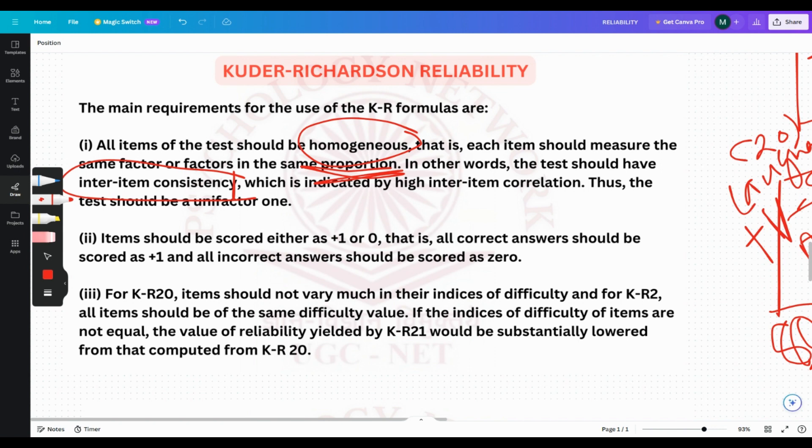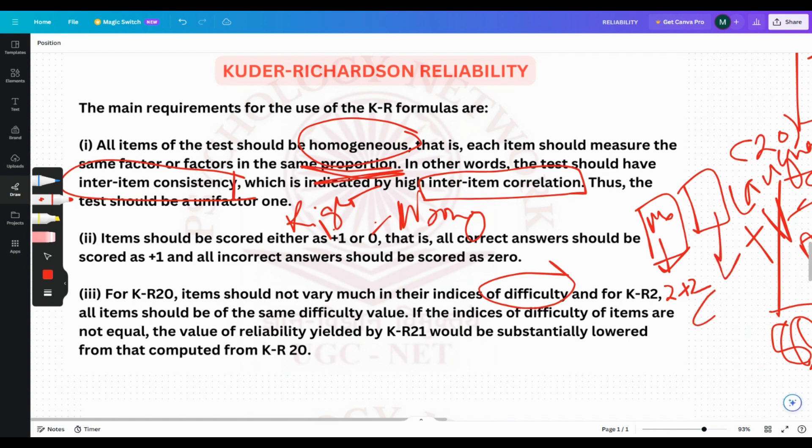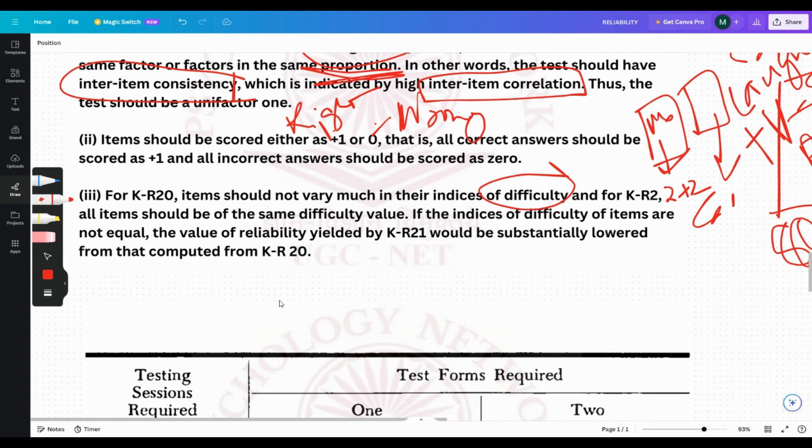The second: items should be scored either plus 1 or 0. Plus 1 right, 0 wrong. No other form of scoring would be there. Third: items should not vary much in the indices of difficulty. Suppose there are two forms of maths. Here you are giving 2 plus 2 kind of difficulty, but here you are giving calculus. It's not possible. You have to give two same kinds of difficulties. So this was your KR reliability.